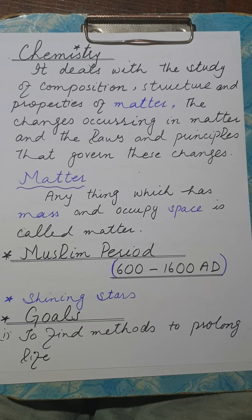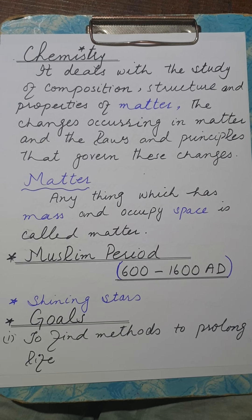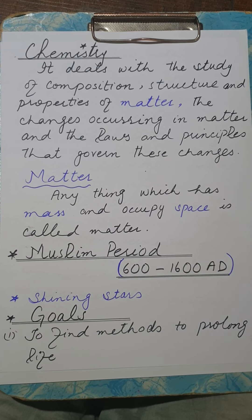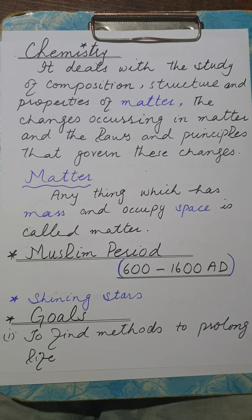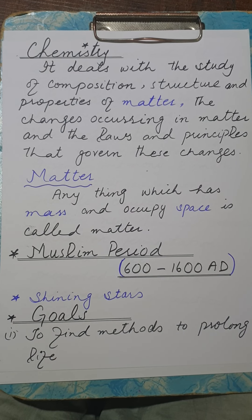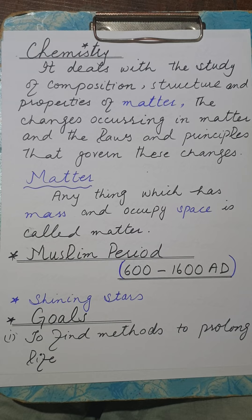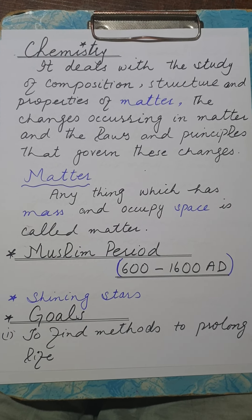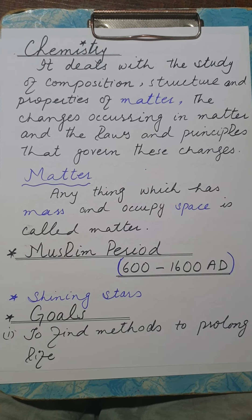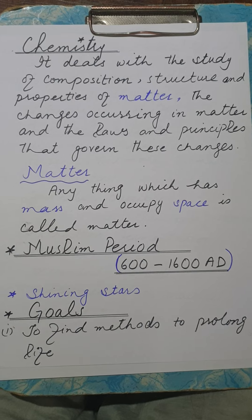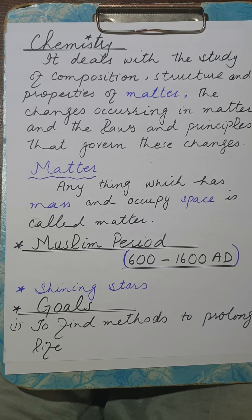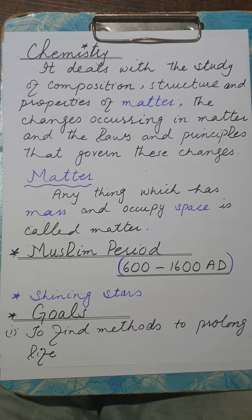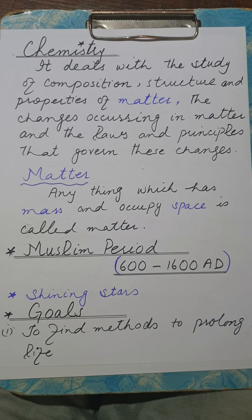We have five God-gifted senses with which we can observe things — for example, the color of things or the smell of things. For example, you can see that paper is white in color, which you can observe with the help of your eyes. Similarly, you notice the fragrance of a rose flower. All such things are considered under physical properties.